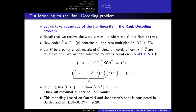Now I describe our modeling for the rank decoding problem. As presented before, there is a perfect equivalence between the decoding problem for matrix codes and the min rank problem. But in the rank decoding problem, there is only a reduction to min rank — it is not an equivalence. The F_{Q^M}-linearity in the rank decoding problem gives strong structure, and that is the structure we will exploit instead of just using the associated min rank instance.